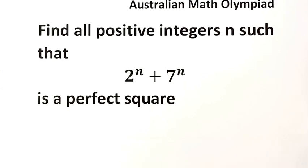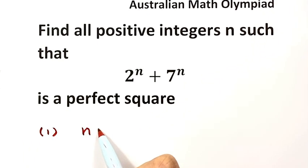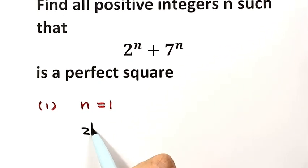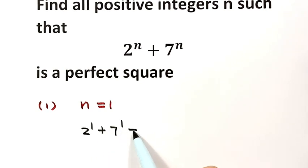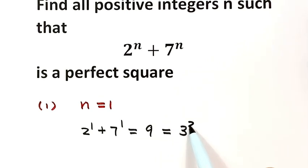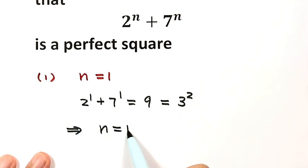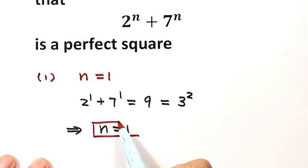We can consider different cases. For the first case, when n equals 1, then 2 to the power 1 plus 7 to the power 1 equals 9, which is 3 squared. That's a perfect square. So n equals 1 is a solution.